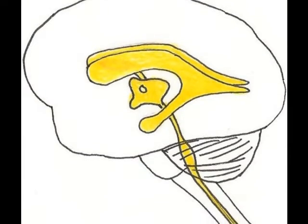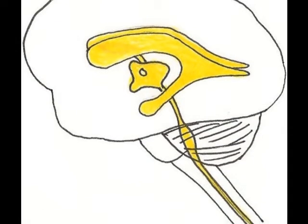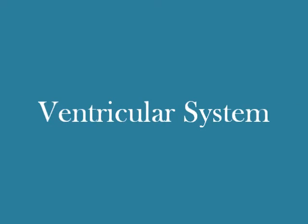Well, we have a set of hollow spaces that the fluid can travel through, and this network of hollow spaces is called the ventricular system.